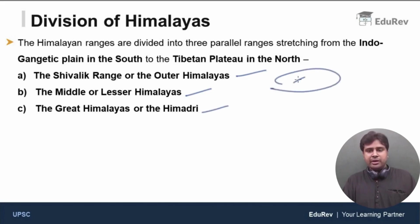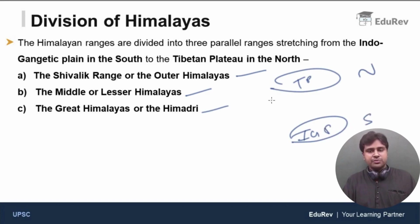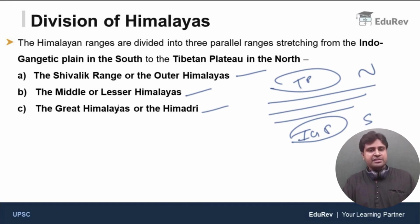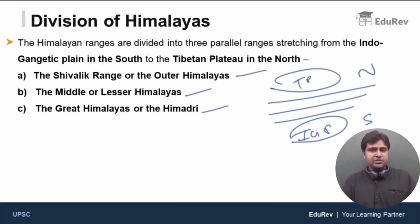In between the Tibetan Plateau in the north and the Indo-Gangetic Plain in the south, we have three parallel ranges of Himalayas. Starting from the south, we have the Shivaliks or the outer Himalayas; the middle one is the middle or lesser Himalayas; and the northernmost one is the great Himalayas or the Himadri. This is what we discussed in the previous video.